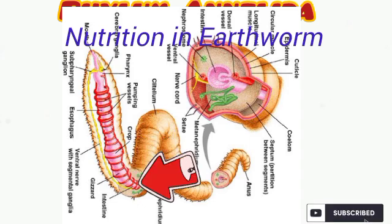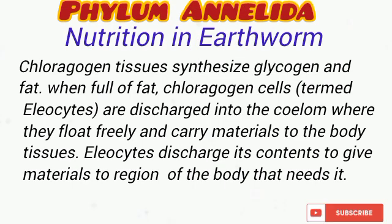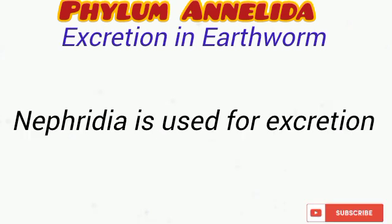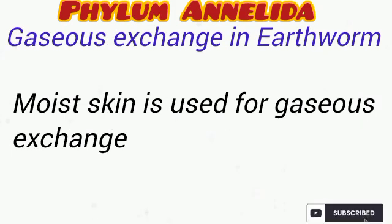Food sucked up by the muscular pharynx is temporarily stored in the crop before being taken to the gizzard, where it is ground into pieces. Digestion and absorption take place in the intestine of the earthworm. Chloragogen tissues in the intestine act as a center for synthesis of glycogen and fat — an anabolic process where smaller molecules such as glucose are used to synthesize larger molecules. Chloragogen cells released into the coelom are termed eleocytes. Undigested food is passed out through the anus. Earthworms carry out excretion using nephridia, while gaseous exchange is carried out through their moist skin.